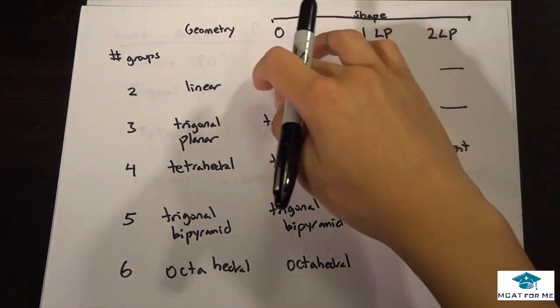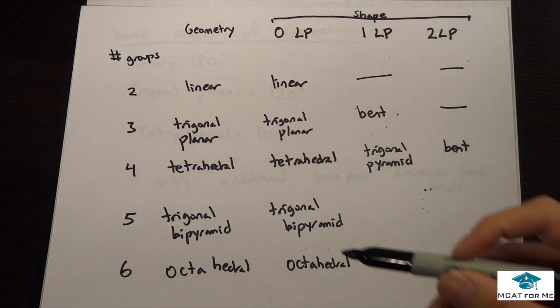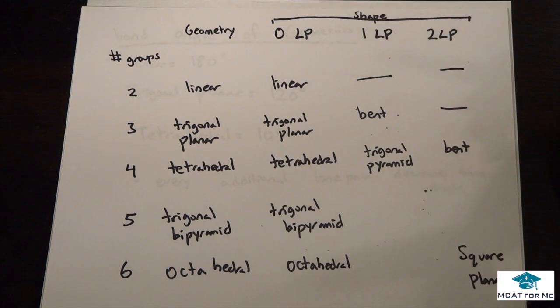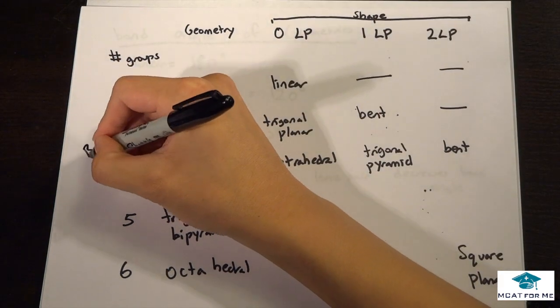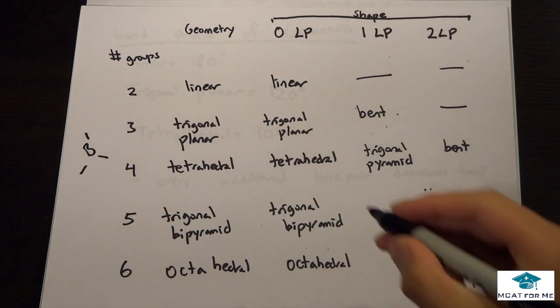But like I said before, if it has zero lone pairs, it's going to have the same geometry as the shape. And so the number of lone pairs will determine the shape. So say something has zero lone pairs but it also has three groups around it. For example, three groups around it, zero lone pairs.